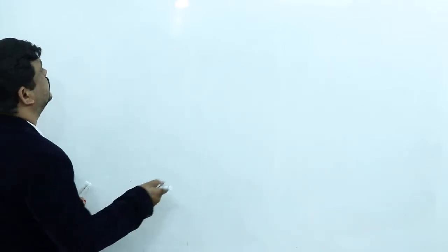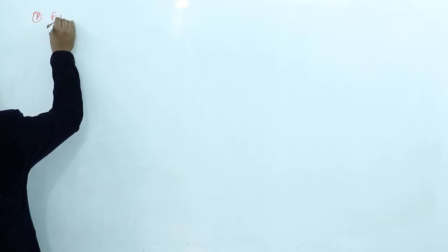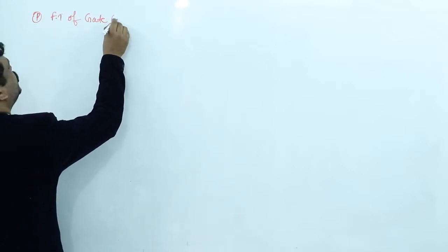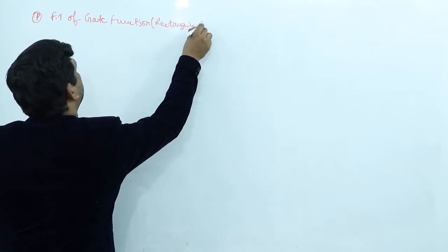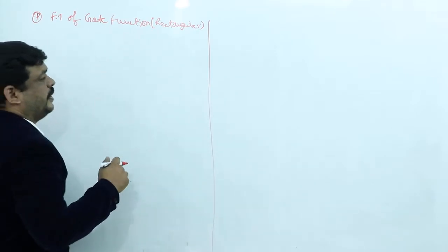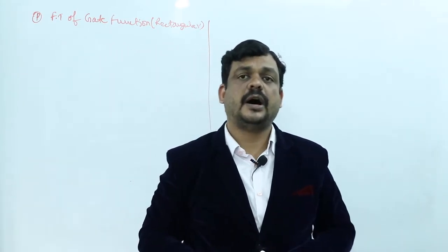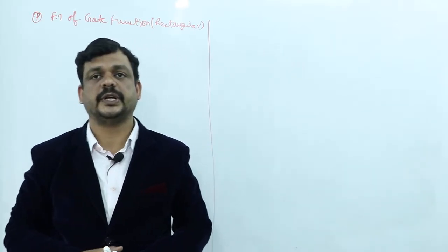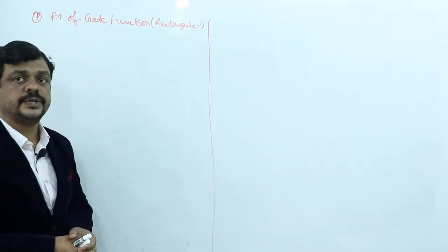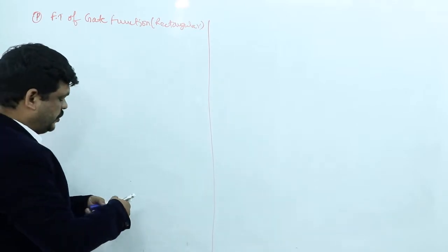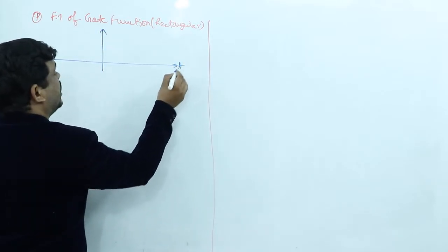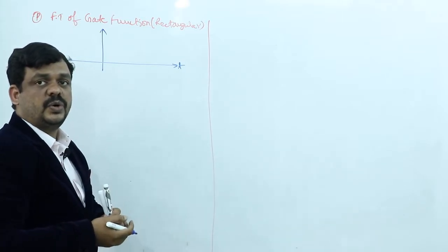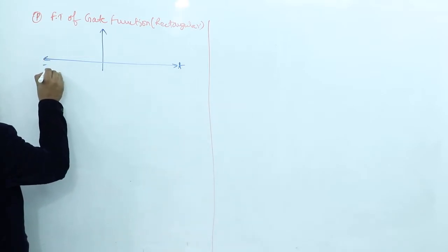We need to find the Fourier transform of the gate function, also called the rectangular function. This question can appear directly by name or from a graphical representation. First, we draw the gate function: it acts as a rectangular function defined in a particular time period with a constant amplitude, represented on the time axis as x(t).